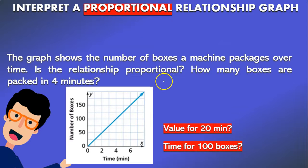Now it also says how many boxes are packed in four minutes. In order to know that we have to recall the formula y equals k times x where k is our constant of proportionality. Now how can we find the constant of proportionality? You have to remember that the constant of proportionality is equal to y divided by x. Now in the graph you have a ton of values of y and x. So you can just take one. Take a random number.